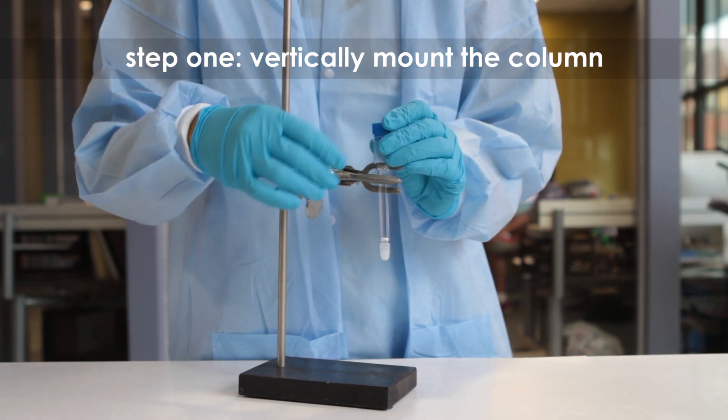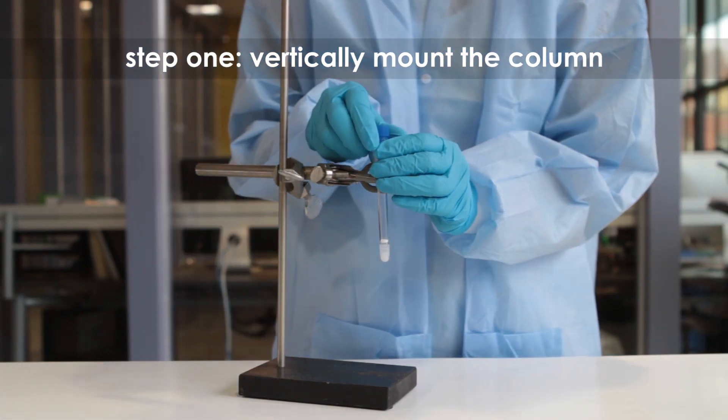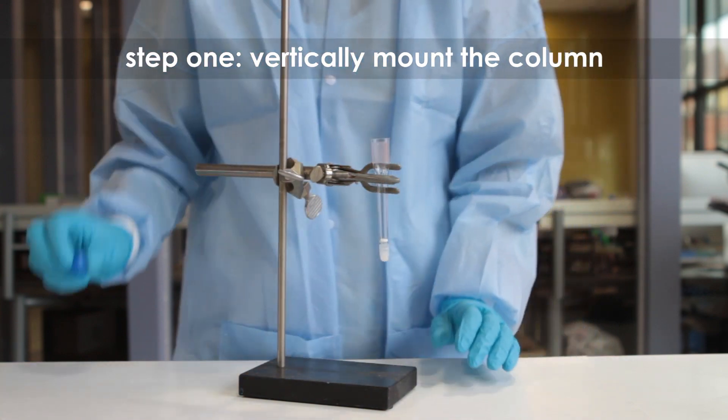Step 1: Vertically mount the column on a ring stand, making sure that it is straight. Keep the bottom cap in place on the column.